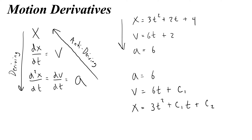This begs the question: what does the constant of integration actually represent when you are doing the indefinite integral? To answer that question, we have to think about what the antiderivative is telling us. If the derivative is telling us about slope, then the antiderivative is telling us about area.